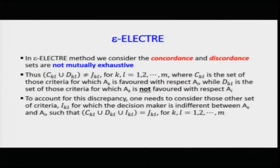In the marketing example, when floating a product with a warranty life, whether more or less than competitors, your loss is calculated accordingly depending on how over-estimation or under-estimation is penalized. It depends on whether the value of A is positive or negative. We are utilizing the same concept here: in the epsilon ELECTRA method, we consider that the concordance and discordance sets are not mutually exclusive.